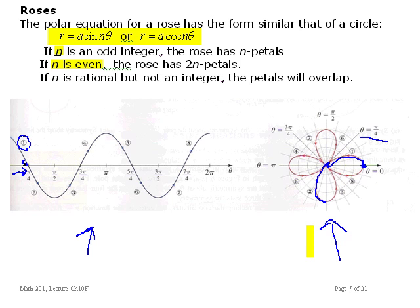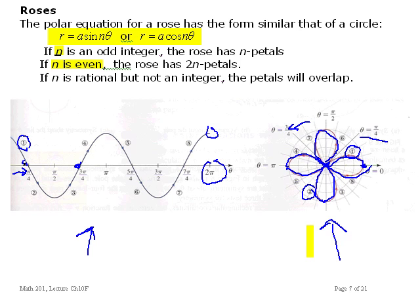We come back to 0, and now continuing, theta is increasing and r is also increasing, tracing out a third and fourth petal. Continuing around: more loops complete the pattern, and we come back to theta equals 0, or 2 pi, where the radius is a again. Those are roses.